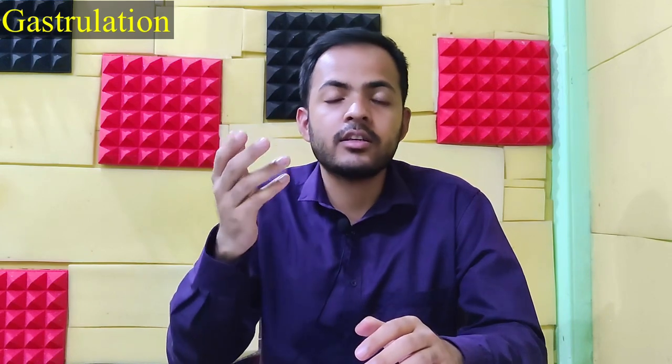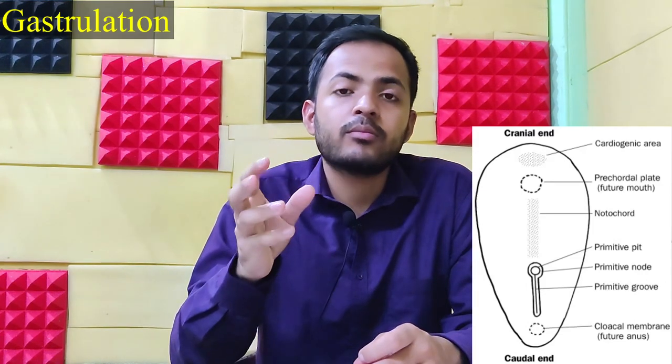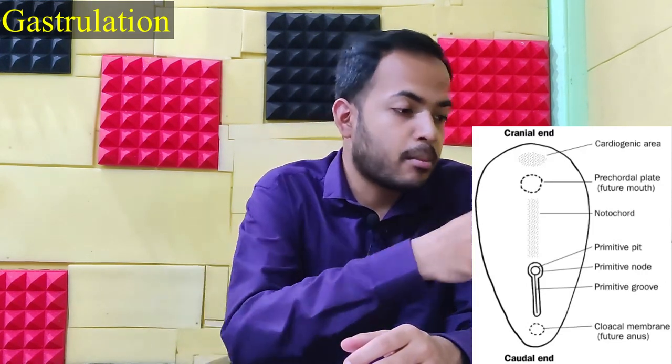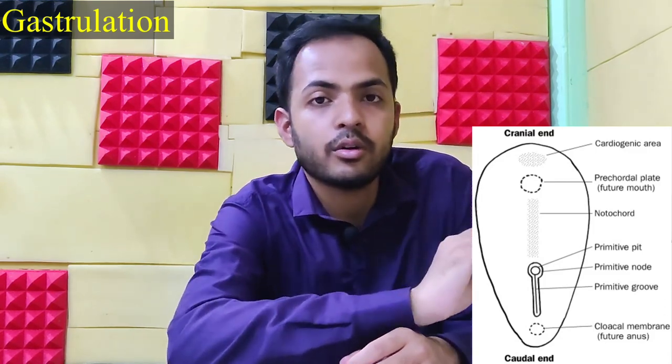Gastrulation is a little bit complicated, so try to understand. Gastrulation begins with the formation of the primitive streak. A few cells from the epiblast accumulate on the dorsal surface of the embryonic disc, mainly at the caudal end — that is, at the lower part — in the midline.